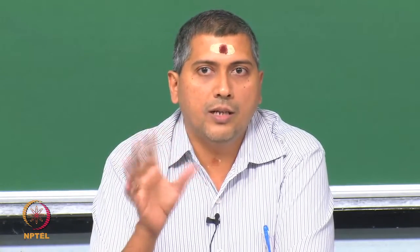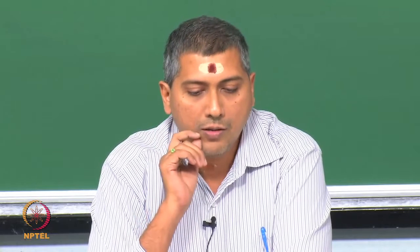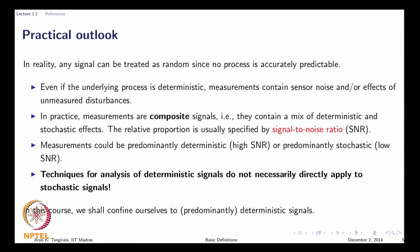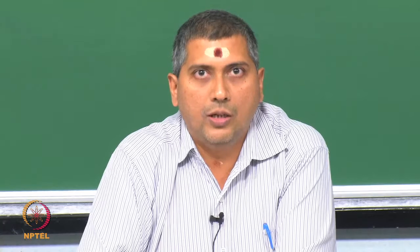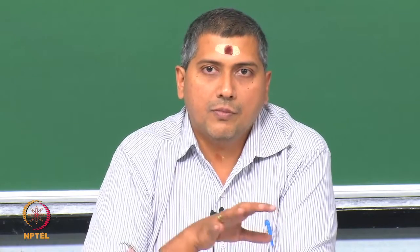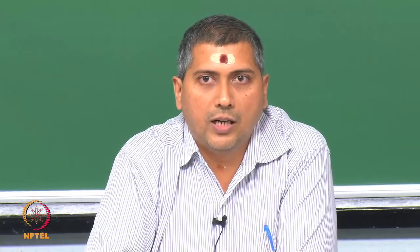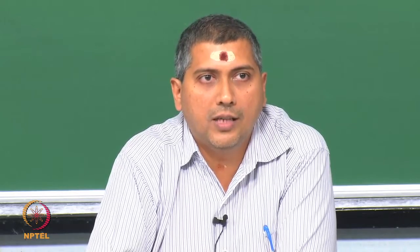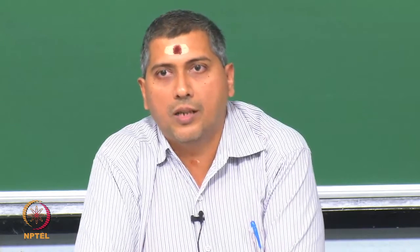We are going to encounter what we call composite signals. In this course, we will deal primarily with deterministic or predominantly deterministic signals — we switch off the random component. But with an important caution: the techniques we learn for deterministic signals are not necessarily applicable to random signals. A classic example is the Fourier transform — Fourier transforms of a class of deterministic signals exist, but Fourier transforms of random signals do not exist.